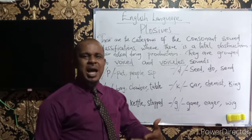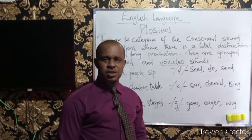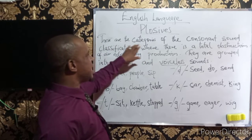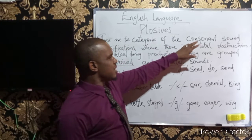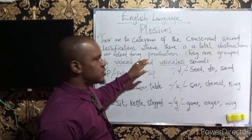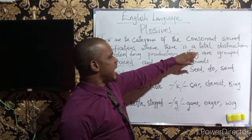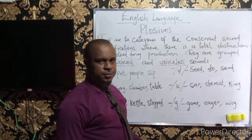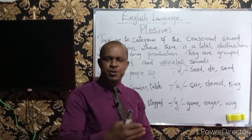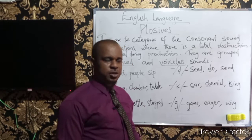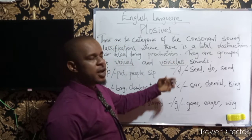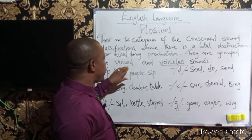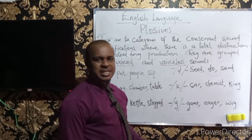The plosives are part of the classifications of the consonant sounds. When we talk about the plosives, these are the categories of consonant sound classifications where there is a total obstruction of air noticed during production — a complete obstruction in the flow of air. They are grouped into voiced and voiceless sounds.